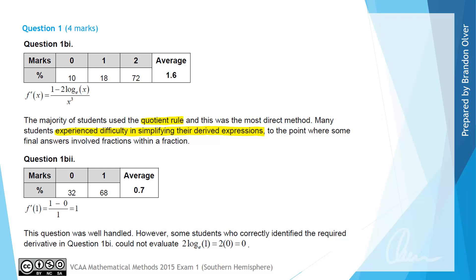For the second part of B, we can see that 68% of students got that correct, and that question was well handled overall. Some students who correctly identified the required derivative in part B.1 could not evaluate 2 log_e(1) as just being 2 times 0 equals 0. So that's a timely reminder that you need to know your log properties and laws.